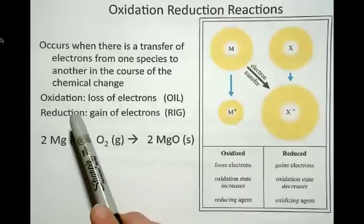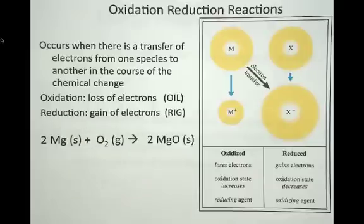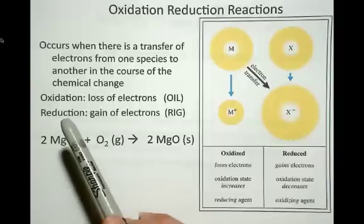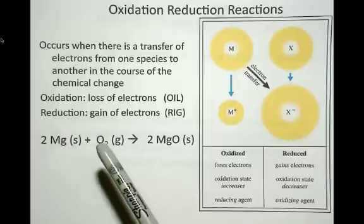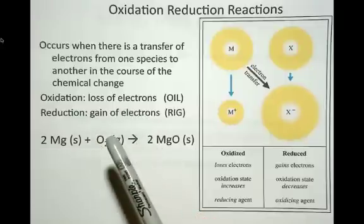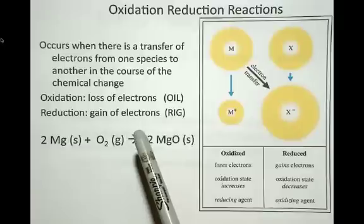a long time ago, people decided that the loss of electrons is called oxidation and the gain of electrons is called reduction. Since matter is conserved, anytime you have one species losing electrons, you're going to have another species gaining electrons.